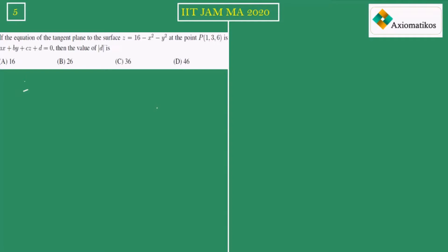The problem says: given the equation of the tangent plane to a surface at a point, find the value of mod d. This question was actually a wrong question in the exam, and we will prove why it was wrong and what the correct options are.